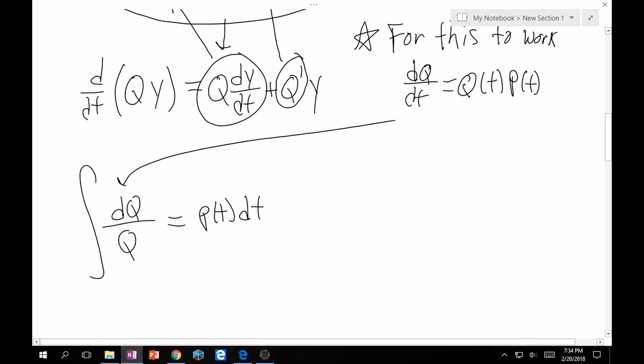Now here I can actually integrate because this differential only is with respect to Q. So this is going to be natural log absolute value of Q. And then when I integrate this, I don't know what my p(t) is, so I'll just leave that as follows. And then exponentiating both sides, I get that Q(t) is equal to e to the integral of p(t) dt.